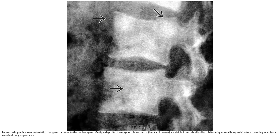This is a lateral radiograph of metastatic osteogenic sarcoma involving the lumbar spine. Multiple deposits of amorphous bone matrix are visible in the vertebral bodies, obliterating normal bony architecture, resulting in collapse of vertebral body height.